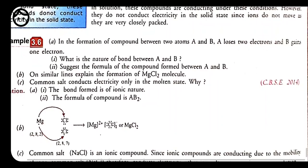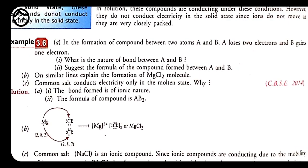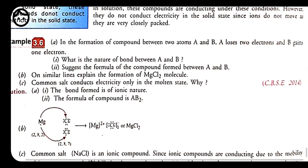Here is a practice question: In the formation of a compound between A and B, A loses 2 electrons and B gains 1 electron. First: the nature of bond is ionic, because the bond is formed by loss or gain of electrons. Second: the formula of the compound — A has 2 positive charges, B has 1 negative charge, so the formula is AB₂. For example, this could be CaF₂ or MgCl₂.